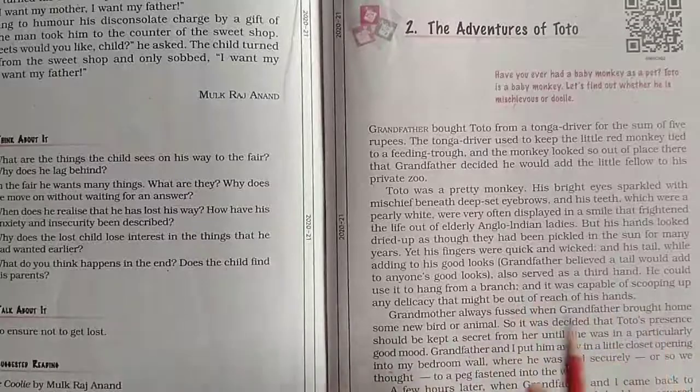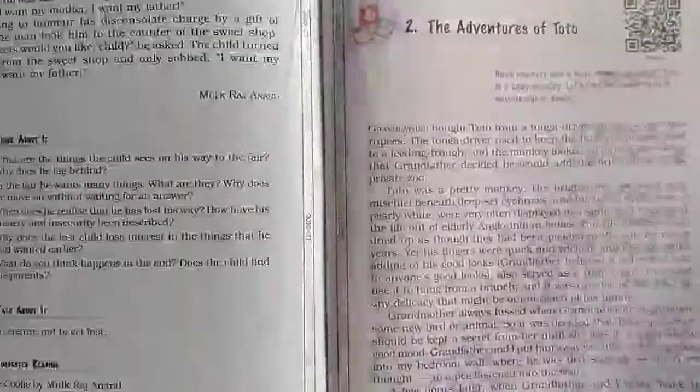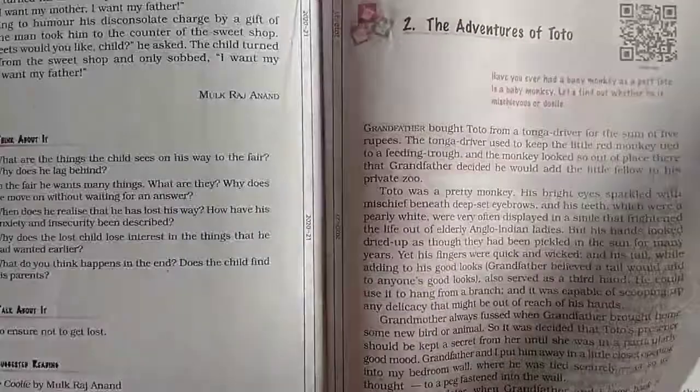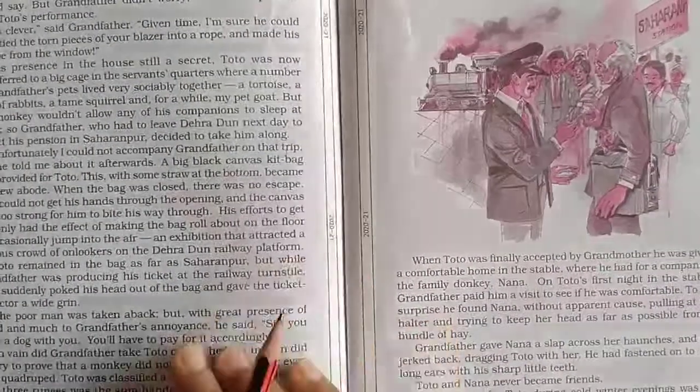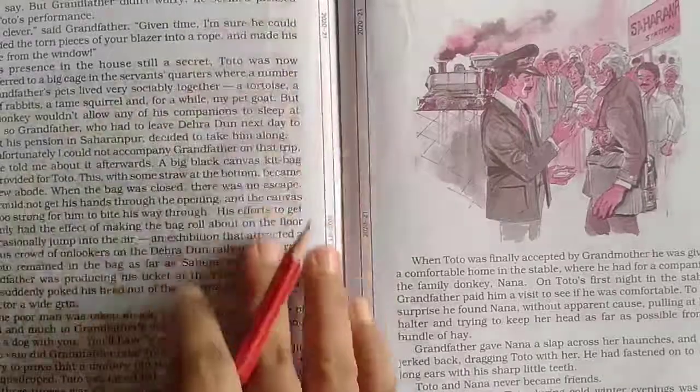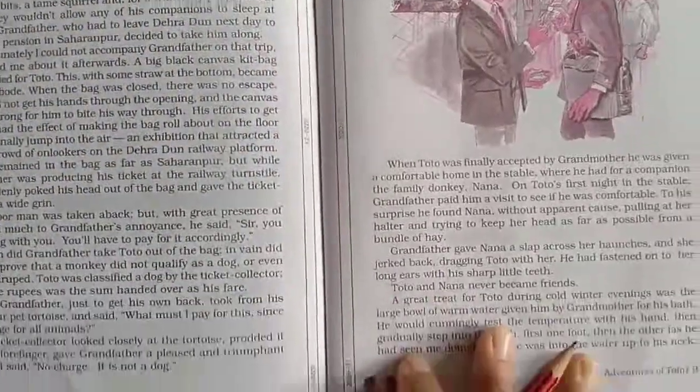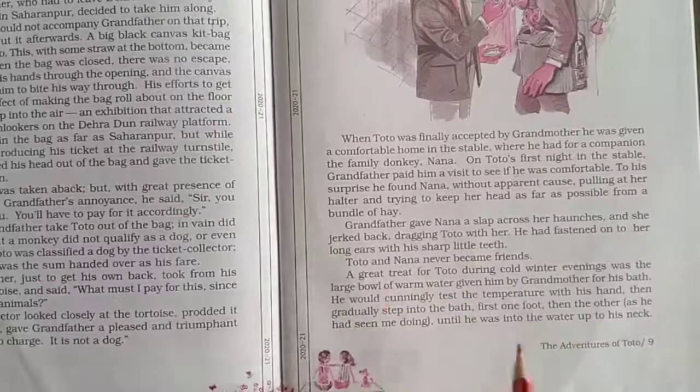Here the story goes on. Toto was in a cage with other pets in the servants' quarters, and grandfather took Toto to Saharanpur. The story is completed there. Now from here we start with grandmother giving Toto a bath.